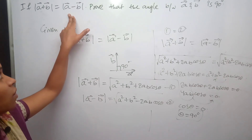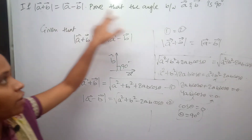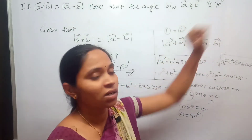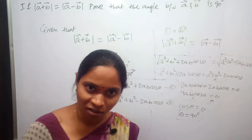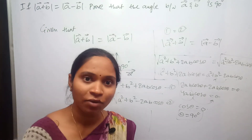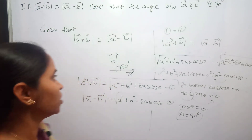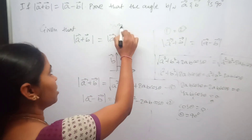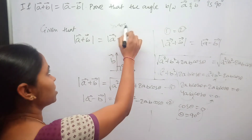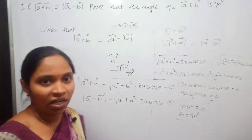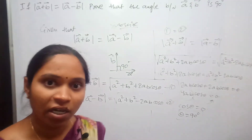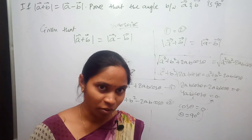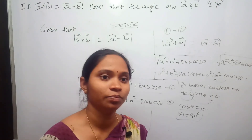Hence, modulus of a+b equals modulus of a−b whenever the angle between a and b is 90 degrees. Here I will end our lecture. Whoever hasn't subscribed to my channel, please subscribe, click the like button, and share with as many people as possible. Bye!